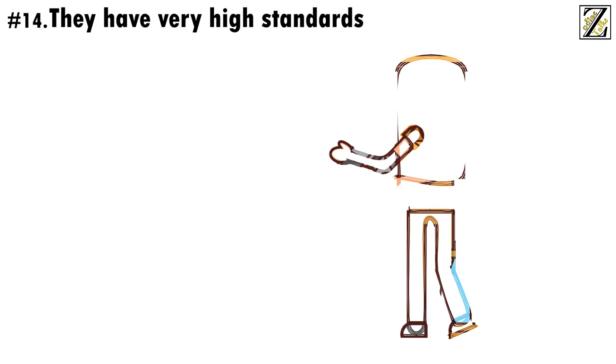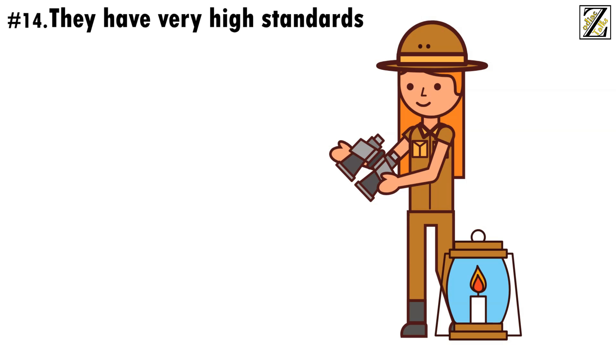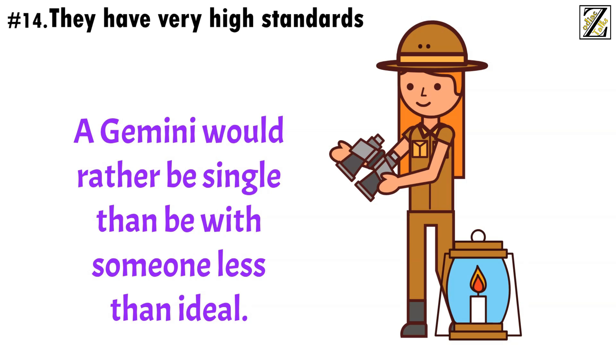Number 14, They have very high standards. Geminis aren't willing to settle in any aspect of their lives, as it goes against their nature. They're not perfectionists, but they know what they want, and they'd rather not get it at all than settle for less than what they want. This goes double for relationships. A Gemini would rather be single than be with someone less than ideal.